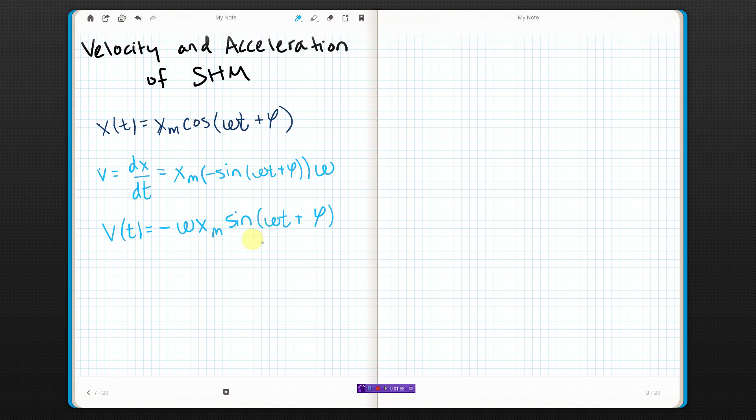Notice, what's the biggest sine can be? So this whole thing right here, the biggest it can be is 1. It can't be more than 1. So the biggest this can be is when sine is 1. So when sine is 1, I get that the velocity is negative omega xm. That's the biggest it can be. So the maximum velocity you can have is negative angular frequency times maximum amplitude. We call that the velocity amplitude, or vm. So that's the maximum you can get.